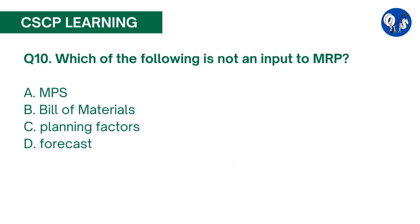Question number 10. Which of the following is not an input to MRP? A. MPS, B. Bill of Materials, C. Planning Factors, D. Forecast. The correct answer is D. The forecast would be an input to the MPS and not MRP.